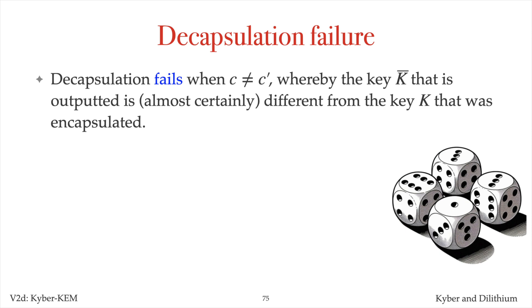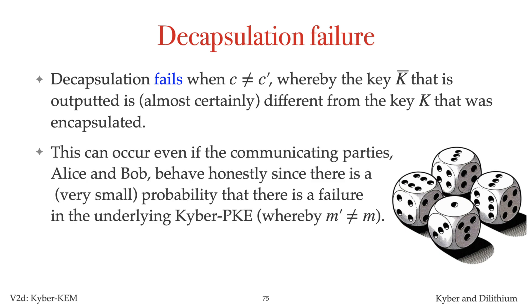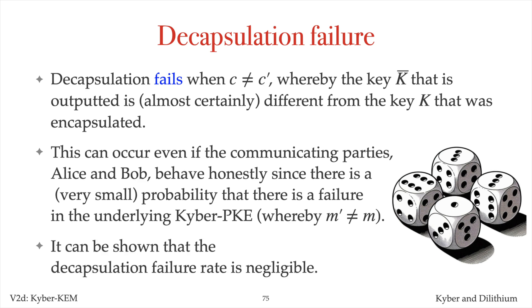Decapsulation fails when c does not equal c-prime, whereby the key k-bar that is output is different from the key k that was encapsulated. Decapsulation failure can occur even if the communicating parties, Alice and Bob, behave honestly. This is because there is a small chance of failure in the underlying Kyber public key encryption scheme, whereby the m-prime recovered is not equal to m. It can be shown that the decapsulation failure rate is negligible.